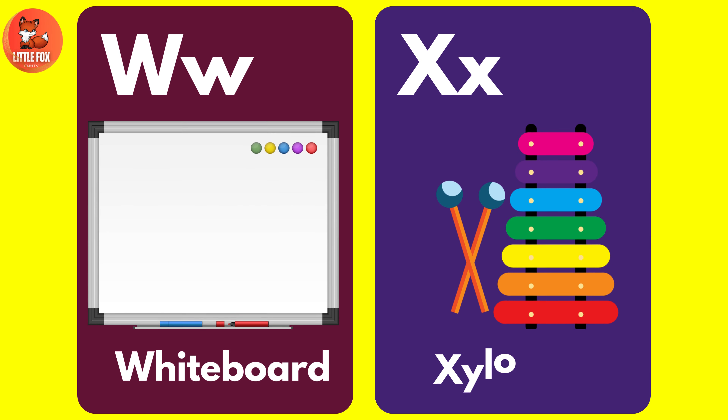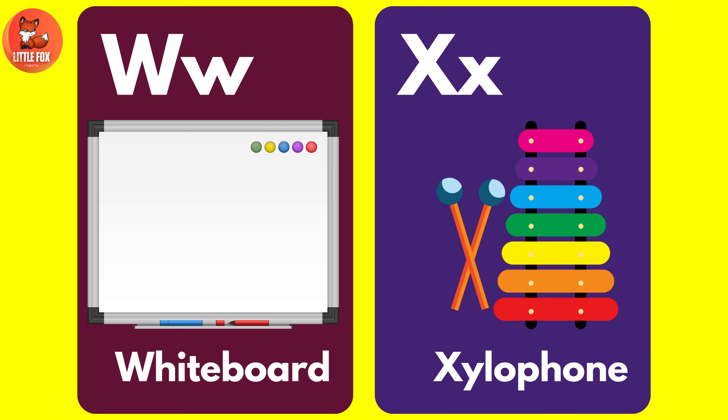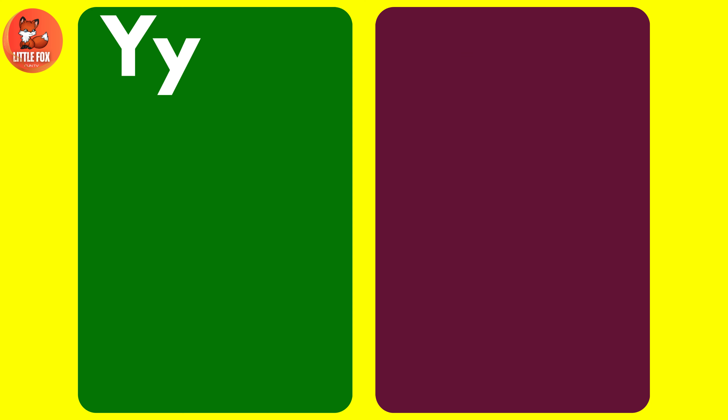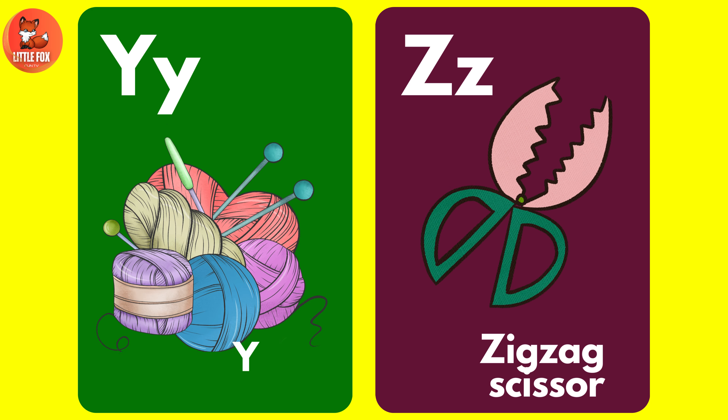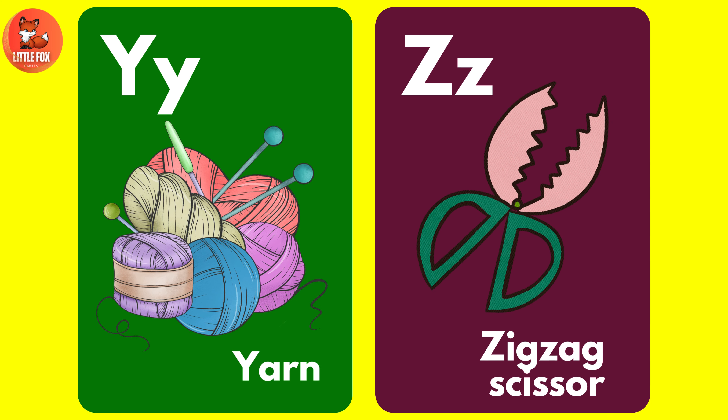W for Whiteboard. X for Xylophone. Y for Yarn. Z for Zigzag Scissors.